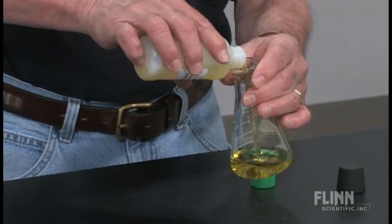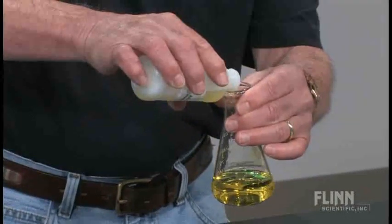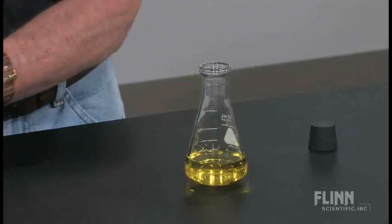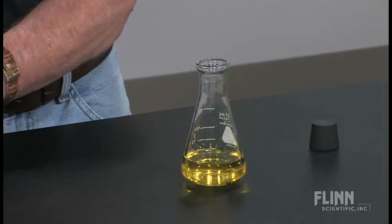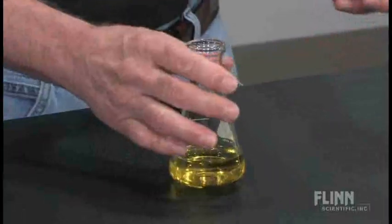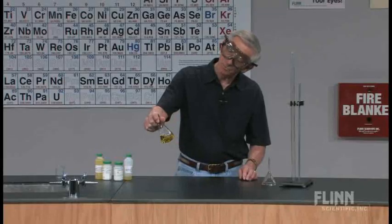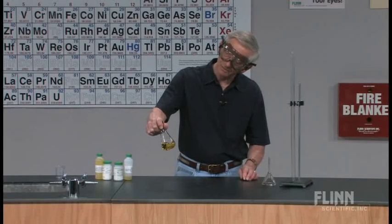In an acidic solution, vanadium 5 is present in the form of the ammonium metavanidate compound, the metavanidate ion. It's a bright yellow color, very pretty.